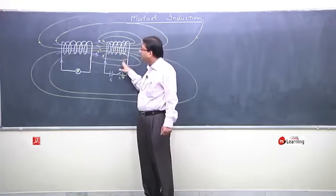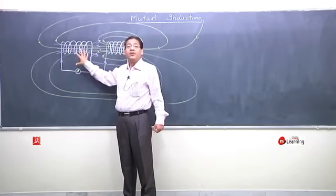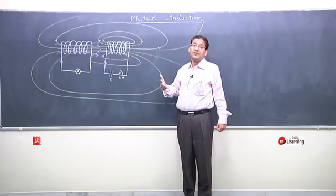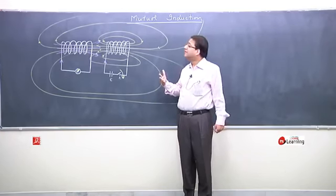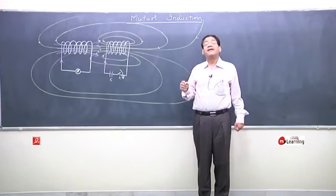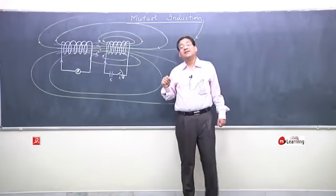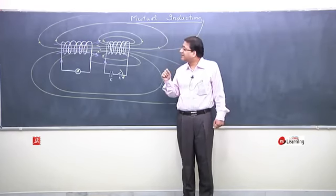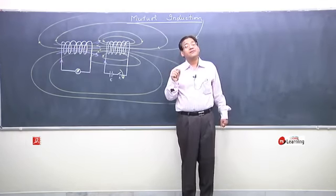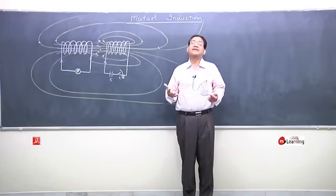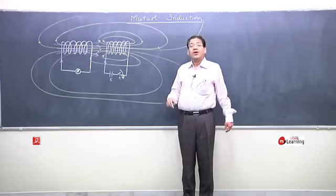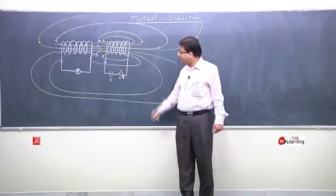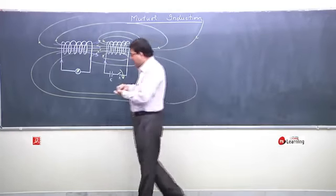The increasing current in coil 1 is inducing current in coil 2, while the zero current in coil 1 stops the increasing current in coil 2. In fact, Faraday and Lenz in their initial experiments — in their initial experimentation to understand the induction phenomenon — the generation of electricity by magnetism — they performed the experiment of mutual induction.